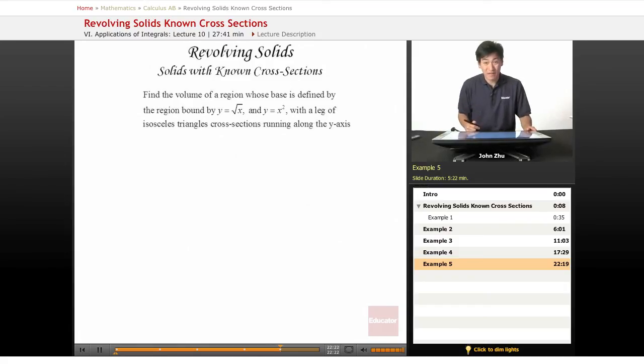We've got another problem, and this time we might have a really weird shape. Find the volume of a region whose base is bound by y equals square root of x and y equals x squared, with the leg of isosceles triangles cross-sections running along the y-axis. So one leg instead of the hypotenuse.